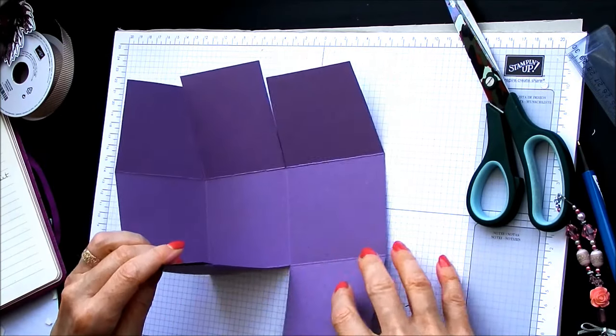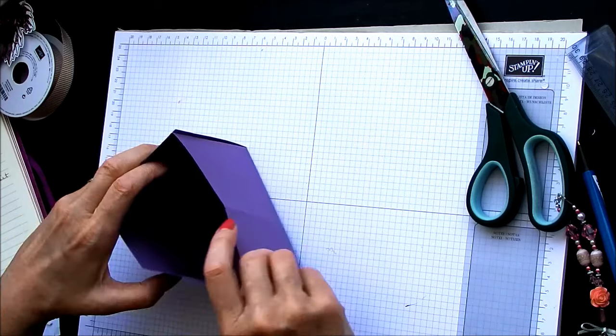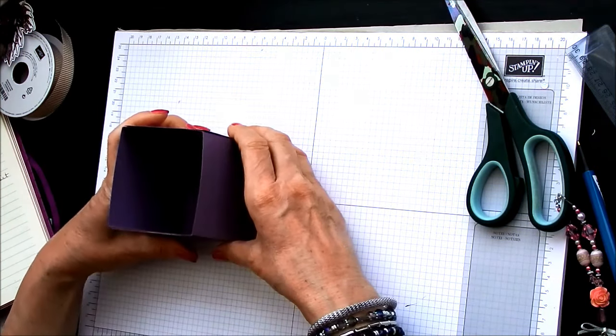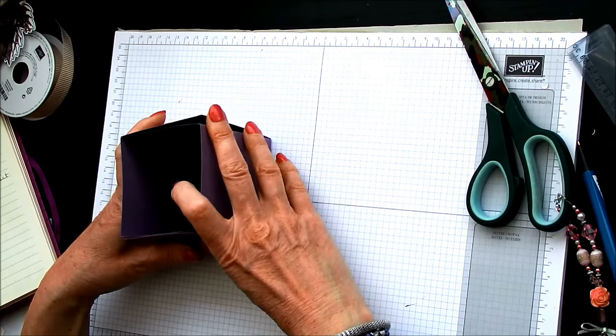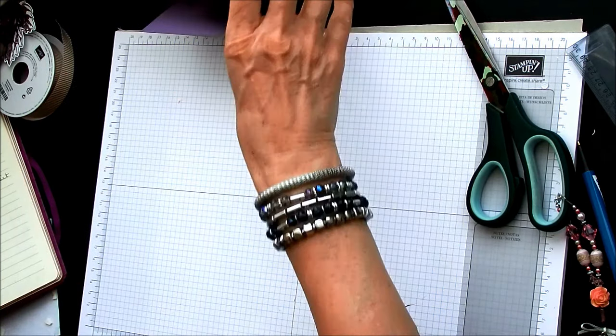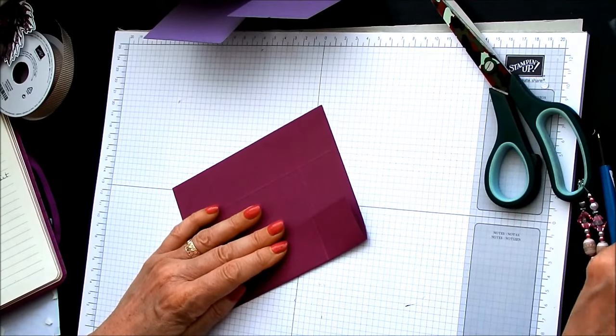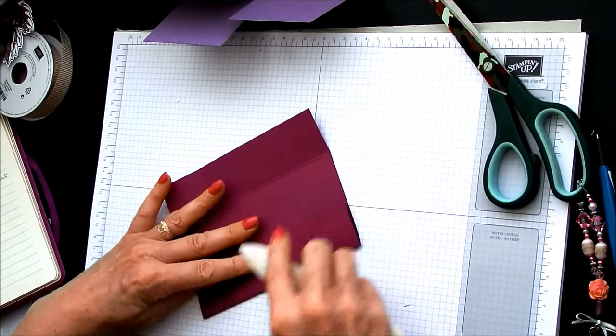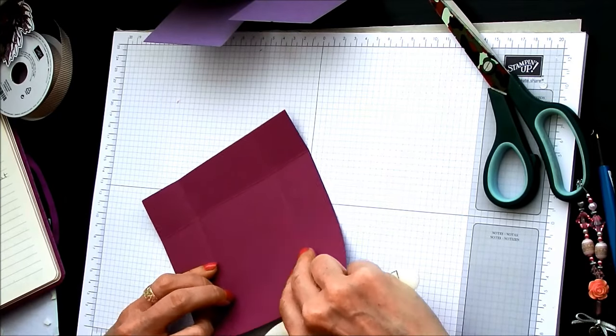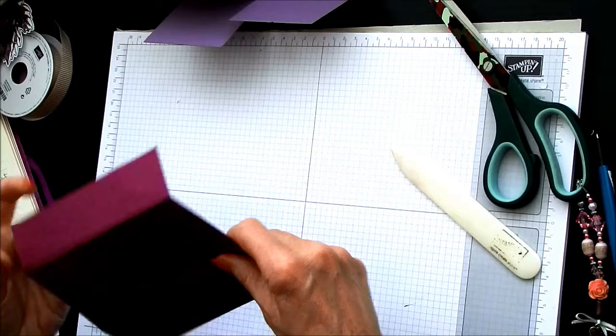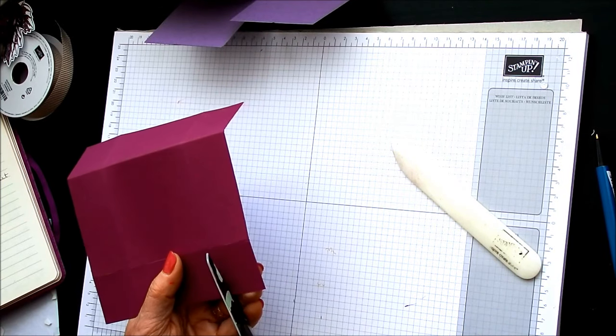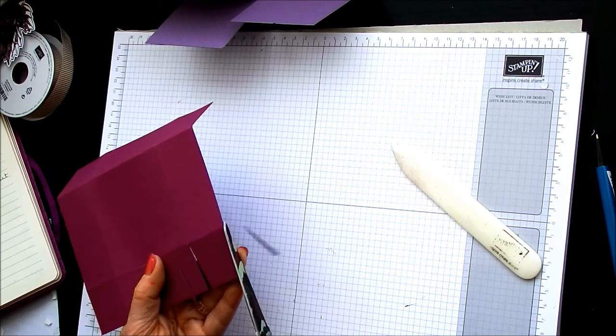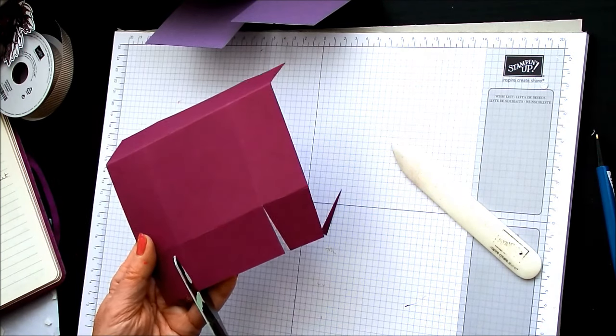So it just goes together like that. And our lid just sits on the top. So, we'll make our lid and then I'll show you how that works. We're going to do the same and fold and burnish the score lines for our lid. Same with the lid, cutting a little wedge at each end of the corners.